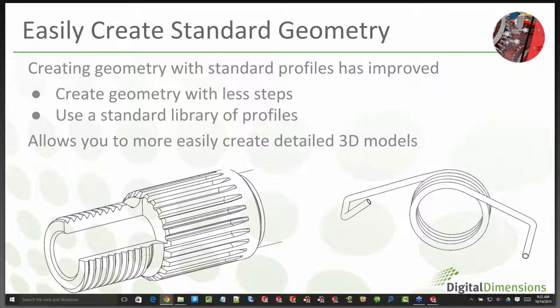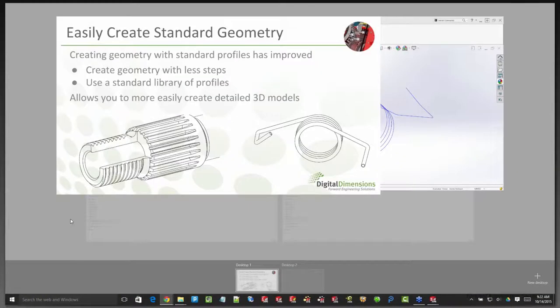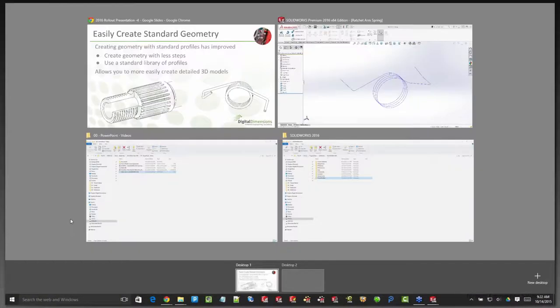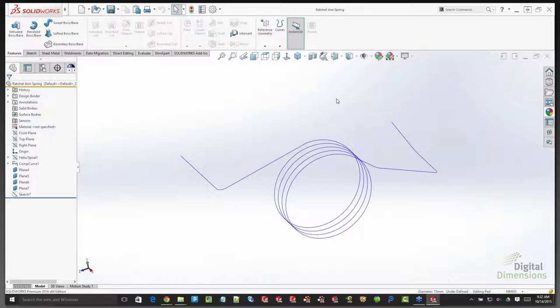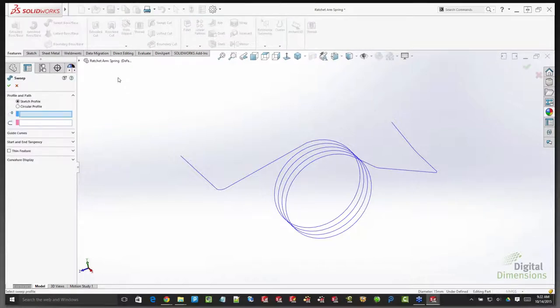The first example is a torsion spring, which would normally take a number of steps to model using sweeps and profiles. There's also a powerful new thread feature to cover. Let's start with the sweep feature — a Boss Sweep with a new option called 'Circular Profile.' You can enter a diameter — this is only for circular profiles — then select the curve on screen. All the same powerful features from sweep are still there, including merge tangent faces and the option to make this a thin feature for wire or tube.